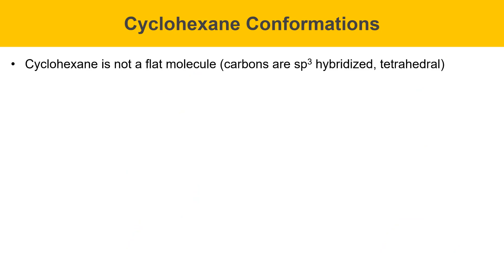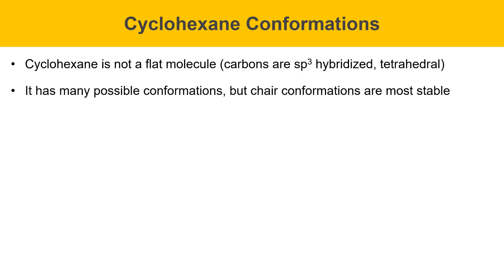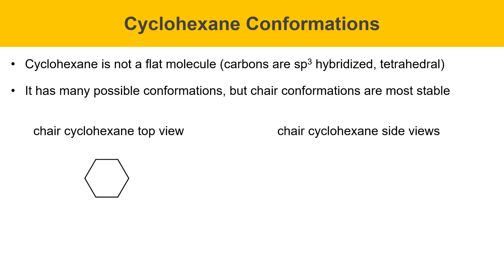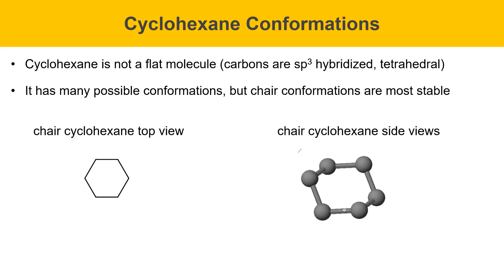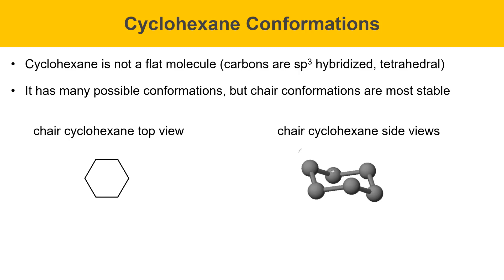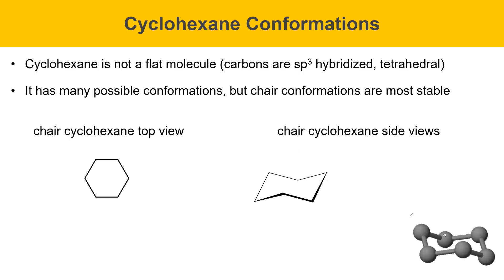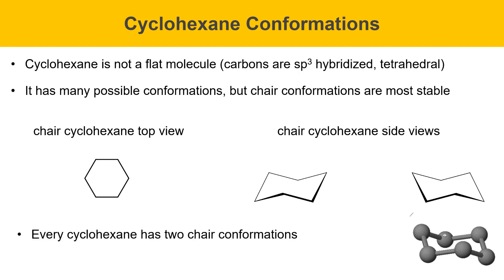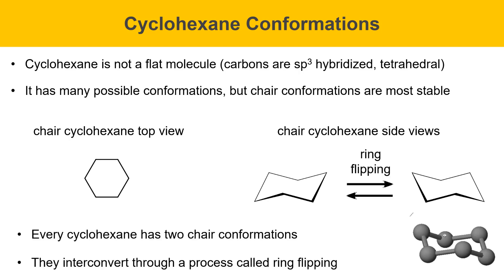Now we're going to look at the conformations of cyclohexane. Cyclohexane is not a flat molecule — the carbons are sp3 hybridized and tetrahedral. It has many possible conformations, but chair conformations are the most stable. Here's a view of chair cyclohexane from the top, which looks like just a hexagon, but when you rotate it and view it from the side you can see the chair shape. Every cyclohexane has two chair conformations, and they interconvert through a process called ring flipping.